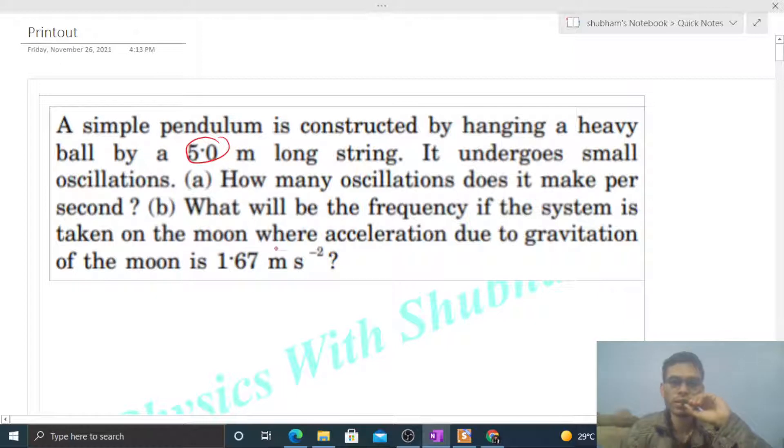Number of oscillations per second means frequency. Frequency is simply 1 upon time period, and time period for a simple pendulum is 2π√(l/g).